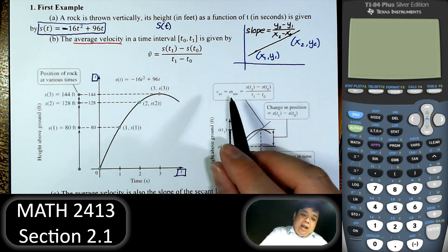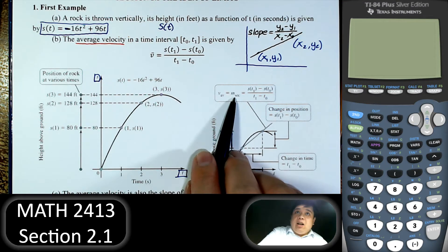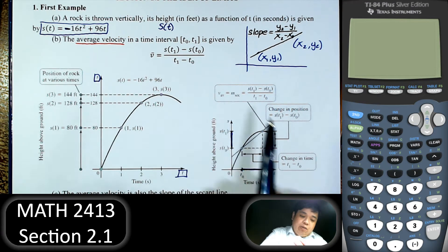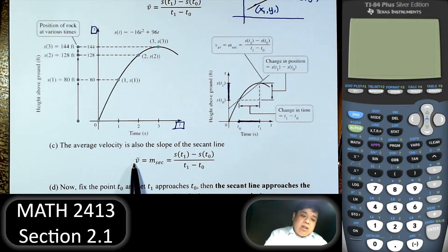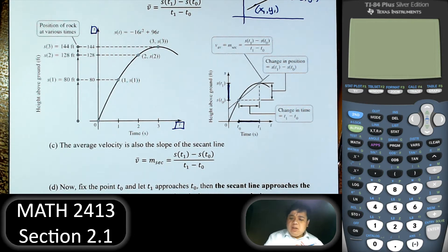We have the slope. And that slope of the secant line is the same as the average velocity. So that's exactly what we have here. The average velocity v-bar is equal to the slope of the secant line.